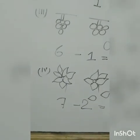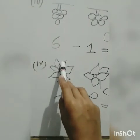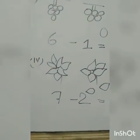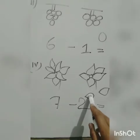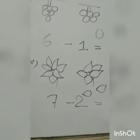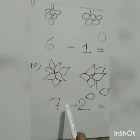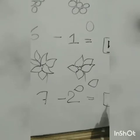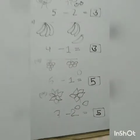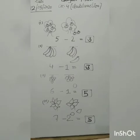The next question: there are one, two, three, four, five, six, seven petals in a flower. Two petals fell down. How many petals are left? One, two, three, four, five. Seven minus two is equal to five — write five. So this is your work; do it well and learn your subtractions.